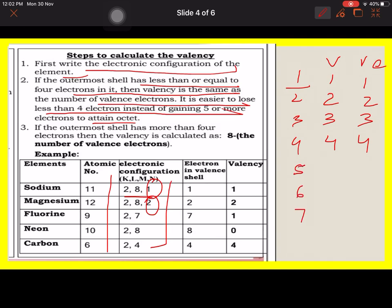But if the outermost shell is having more than 4 electrons, then the valency will be 8 minus the number of electrons in the outermost shell. You can see 8 minus 5, valency will be 3, but valence electrons will be 5. You can see the total should come out to be 8 in every case.